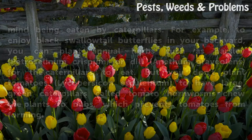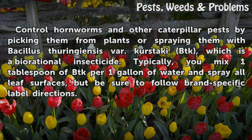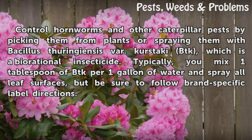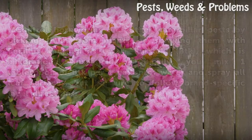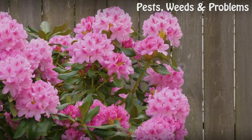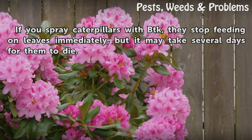You don't want large green caterpillars called tomato hornworms chewing tomato plants to nubs, which prevents tomatoes from forming. Control hornworms and other caterpillar pests by picking them from plants or spraying them with Bacillus thuringiensis var. kurstaki (BTK), a biorational insecticide. Typically you mix one tablespoon of BTK per one gallon of water and spray all leaf surfaces — follow brand-specific label directions. Note: caterpillars sprayed with BTK stop feeding immediately, but it may take several days for them to die.